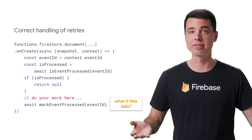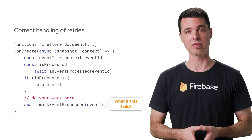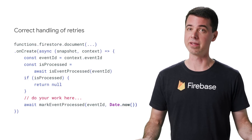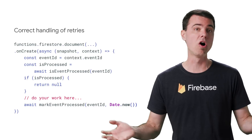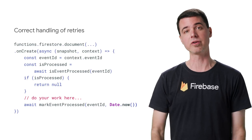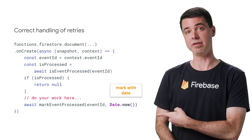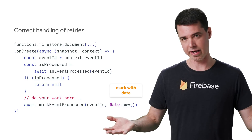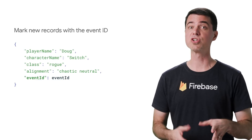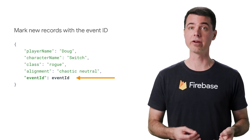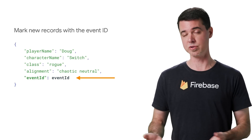Now, some of you are thinking: what if the write of the event ID fails? In that case, if the event gets redelivered, you may end up duplicating the work, but I expect this overall situation to be extremely rare. Others might be thinking: I have a lot of events, and writing all those event IDs is going to take a bunch of storage. You could deal with this by associating a date with the event ID and periodically cleaning up these records after they're a day old. Or if your function just adds a record to the database, put the event ID in the new record so you can query for it later during a retry to find out if the event was previously processed.